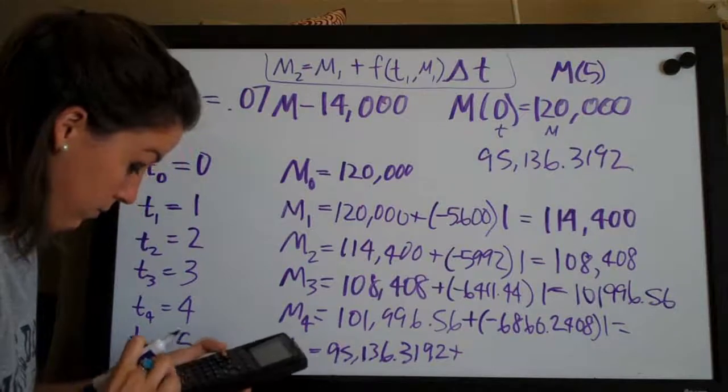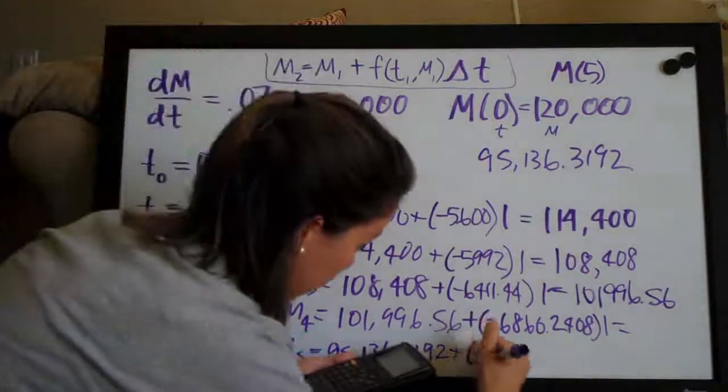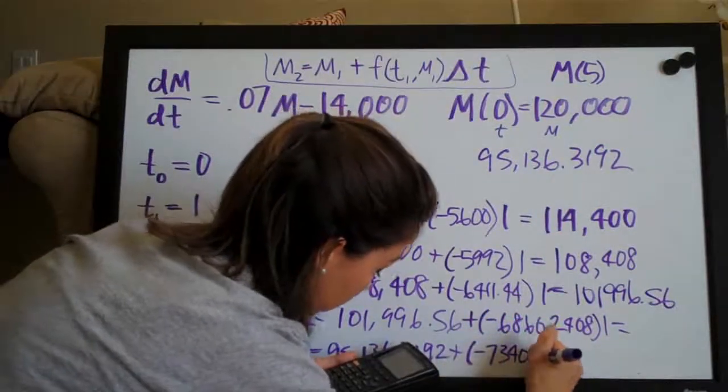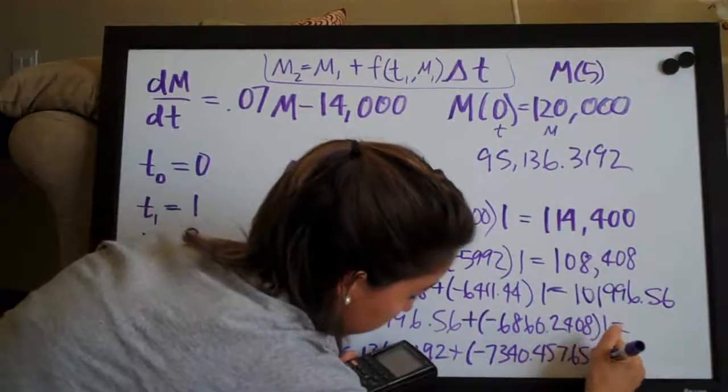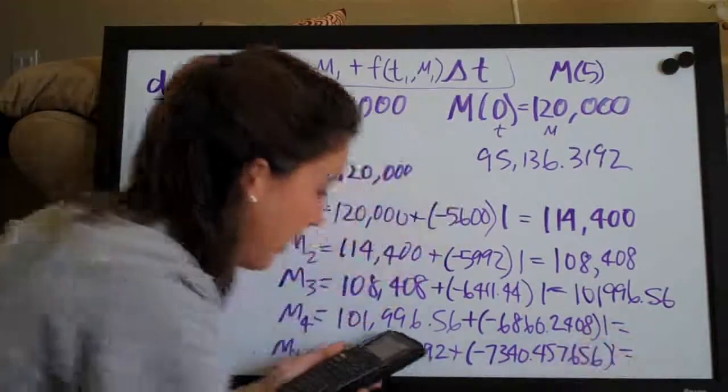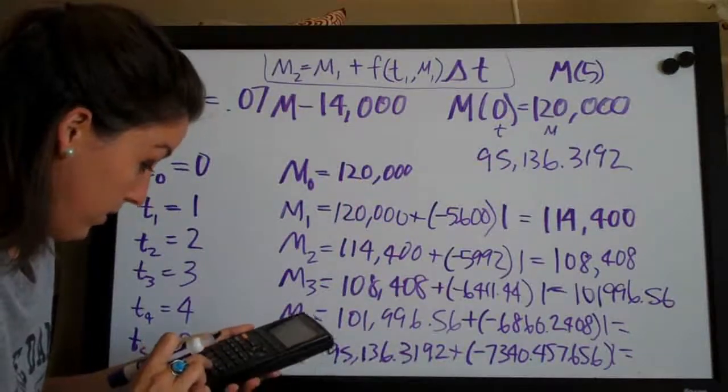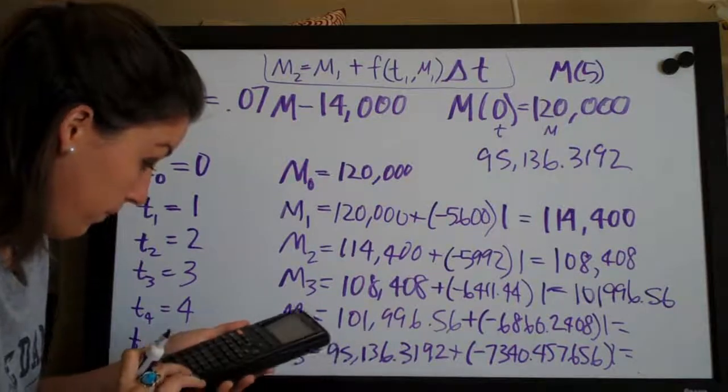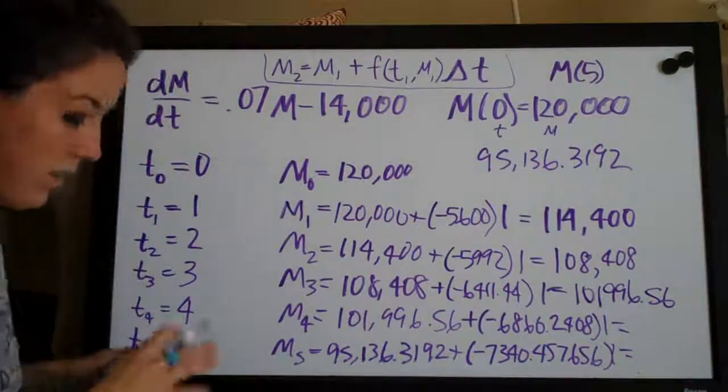And then, so we add that to 95,136.3192 and our final answer is, after we kept all of our decimal places, 87,795.8616.